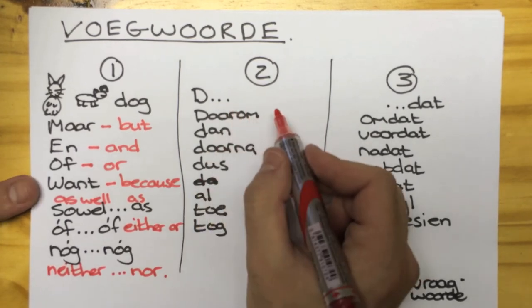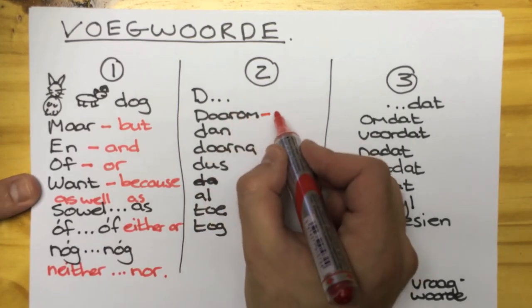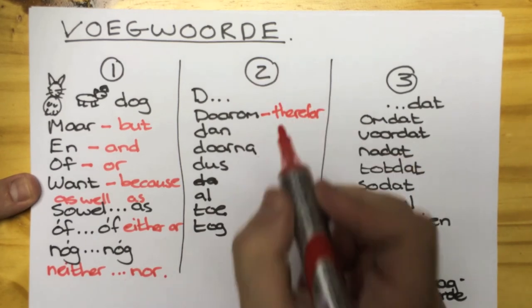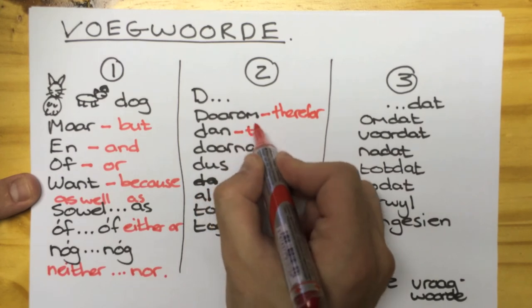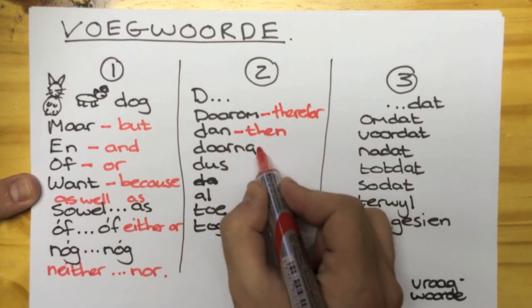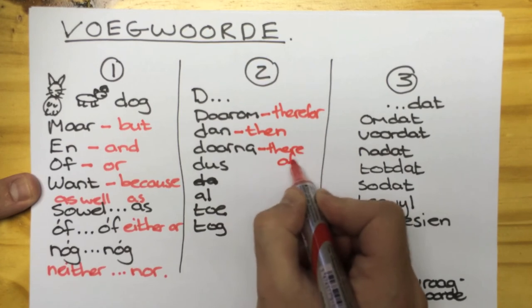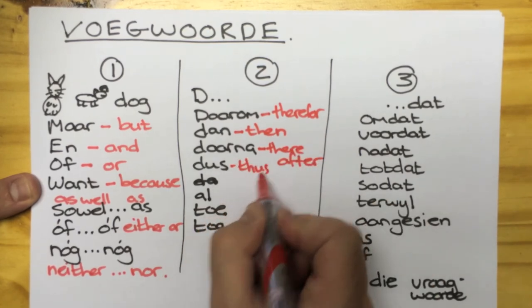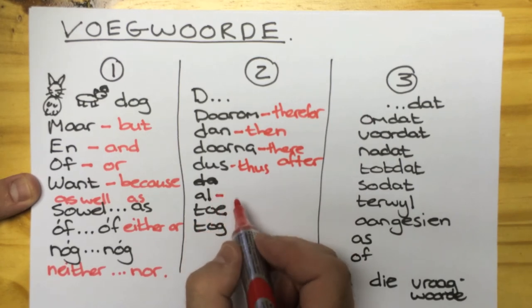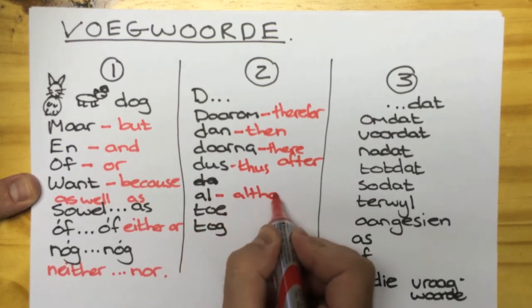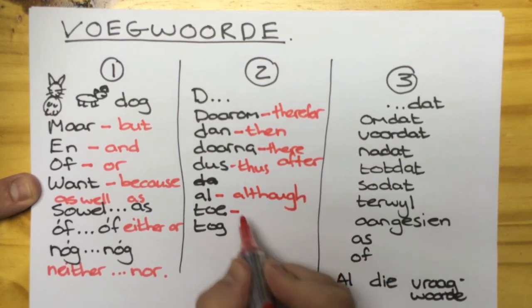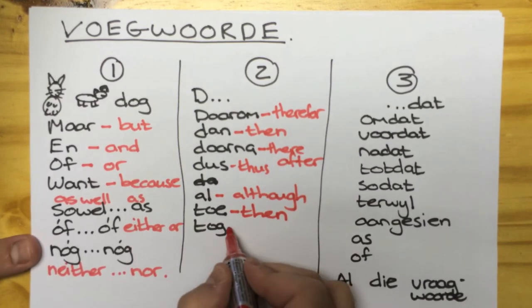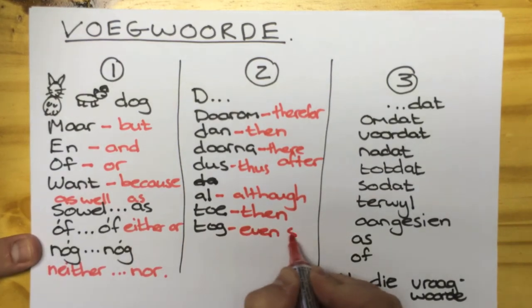Group 2: darom means therefore; dan — then; daarna — thereafter; dus — thus; al — although; toe — then; toch — even so.